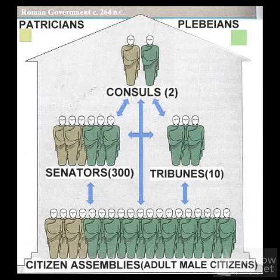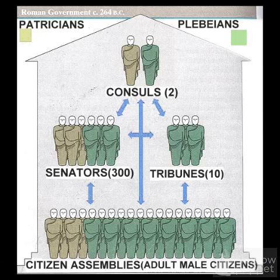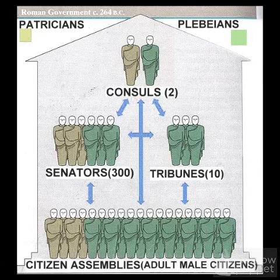Ancient Rome is an excellent example of a representative democracy. The citizens — and again, we're talking specifically about male citizens — would vote for representatives, either tribunes or senators. These are the people who would make up the Roman Senate, and they were the ones who actually governed the people. Our own modern U.S. government is based very much on the model set by the Roman Republic.